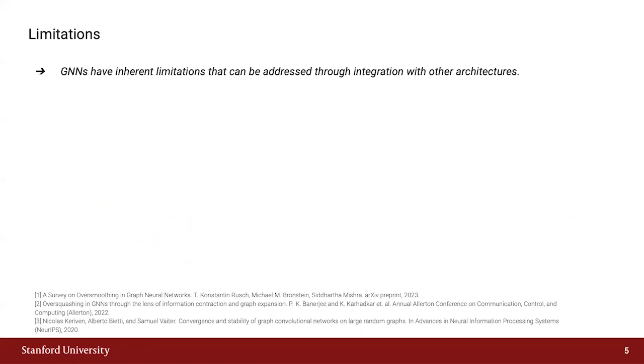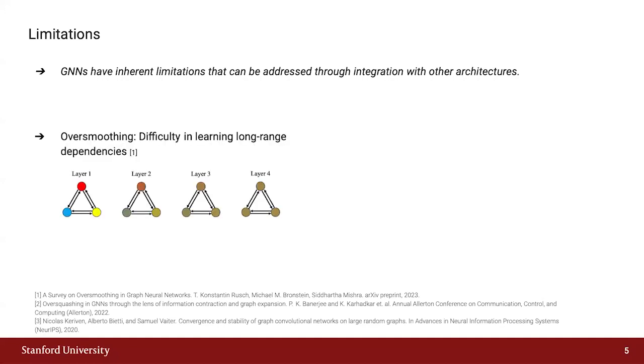Because GNNs are a rather young architectural type, they come with some unique limitations. Over-smoothing occurs when a model excessively aggregates information from neighboring nodes over multiple layers, leading to a loss of discriminative features and blurring of node representations. Further, graph neural networks are rather unstable. Even small perturbations like adding a node or removing an edge or small perturbations within the node features themselves can lead to drastically different outcomes.